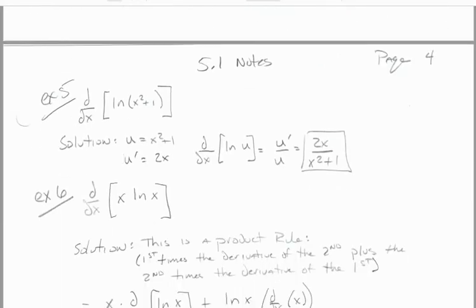Let's take a look at another one with a binomial. We want to find the derivative of the natural log of the quantity x squared plus 1. We let u equal x squared plus 1, and u prime is 2x. So u prime over u gives us 2x divided by x squared plus 1. In layman's terms, it's 1 over whatever the stuff is times the derivative of the stuff — 1 over (x² + 1) times 2x gives us 2x over x squared plus 1.